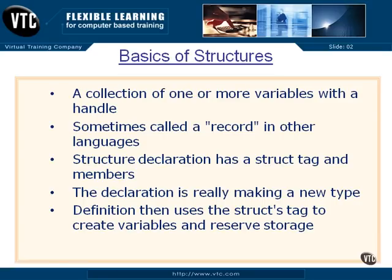An array was pretty easy because when we made it up, they were all the same things — all characters, integers, floats — all of the same type of variable. We're going to be able to use structs in an array as well, because the array is just an assembly of the same type. And a structure is just a way of making a new type.